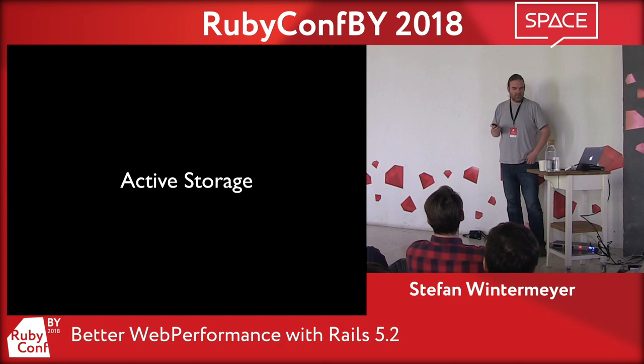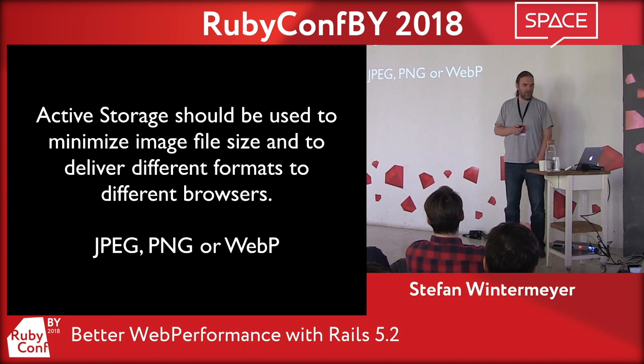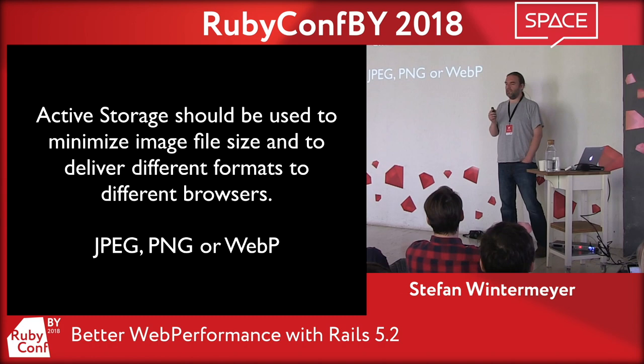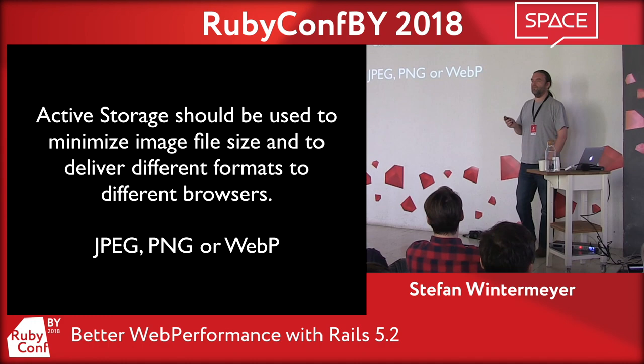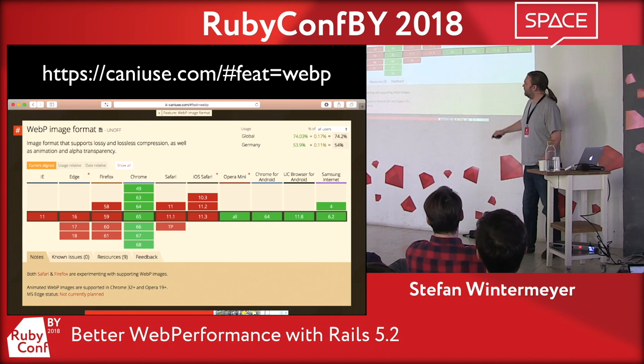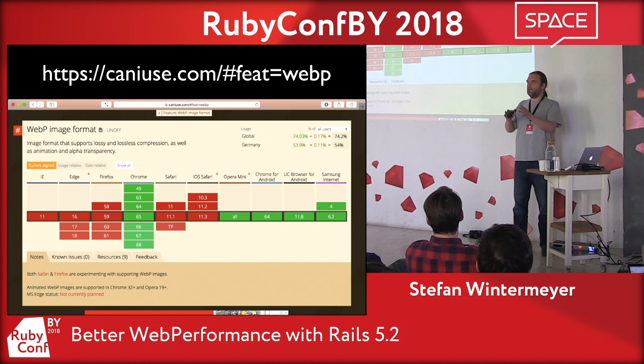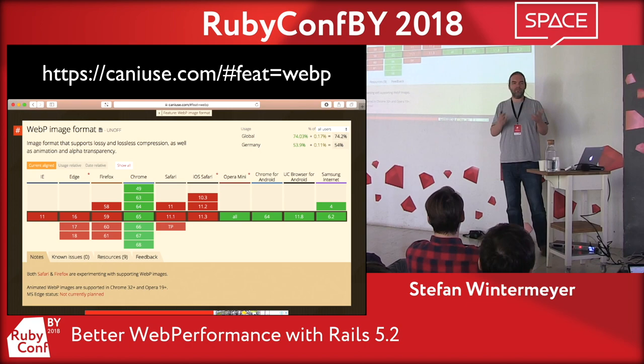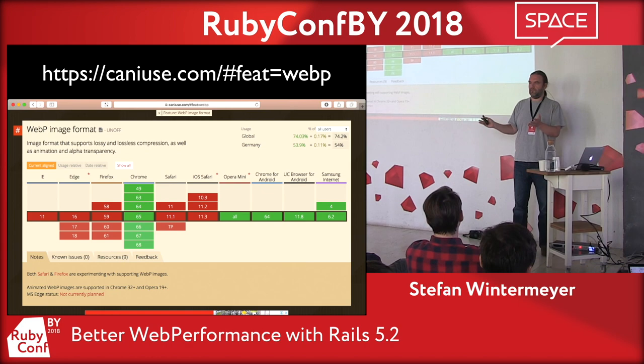What about Active Storage? You want to use Active Storage to minimize image size. You want to deliver the best possible image for the given browser — for example WebP, which is used by Chrome. Safari and Firefox are experimenting with it. WebP delivers smaller files with better quality. You can use Active Storage to deliver different image formats to different browsers — that's very powerful.